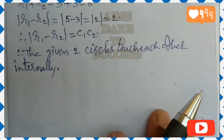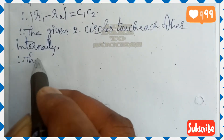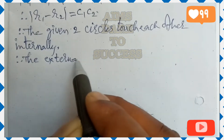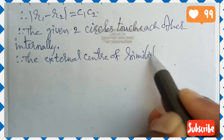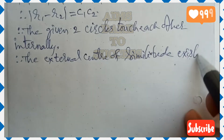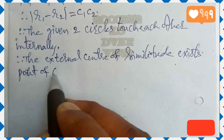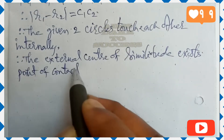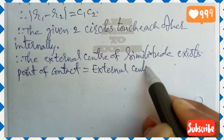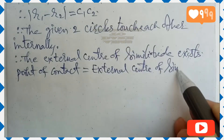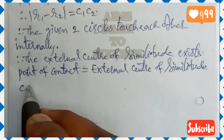The two circles touch each other internally. When |r₁ − r₂| = C₁C₂, the external center of similitude exists. The external center of similitude uses the section formula externally — from 10th class geometry, the external section formula has a minus sign. Since they asked for the point of contact, the point of contact is the external center of similitude.